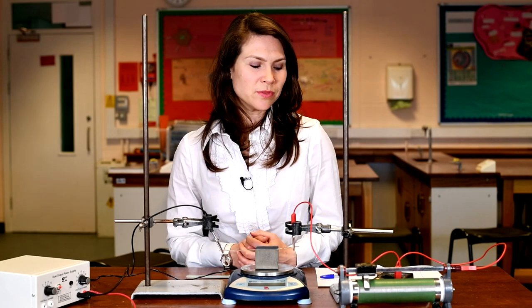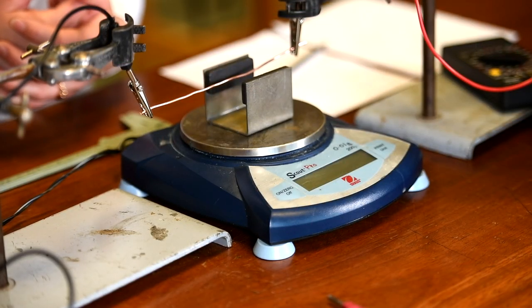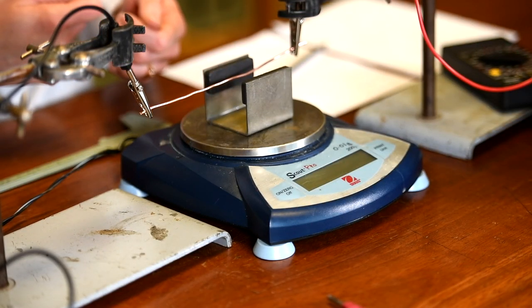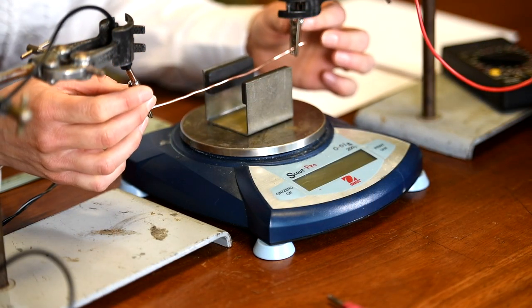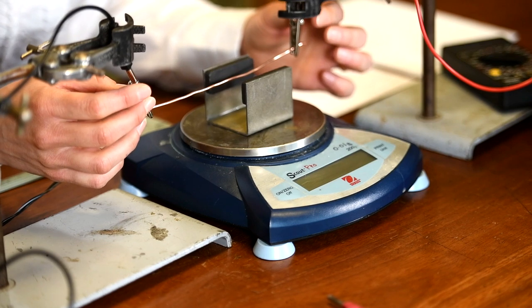To determine the magnetic flux density, you can change different variables. One variable you could change would be the length of the wire. However, this is quite tricky to do because each time you change the length of the wire, the wire will move and be in a different position, so it might not be a constant magnetic field. On that note, we have actually clamped the wire here today to keep it as stable as possible.